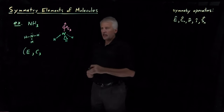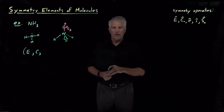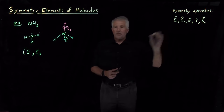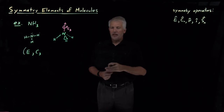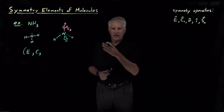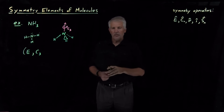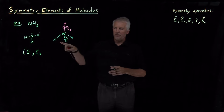That's the only rotation we'll be able to find. As for reflection planes: does the molecule have any reflection planes? Can I bisect the molecule in some way that leaves the half on one side of the mirror identical — a mirror reflection of the half on the other side? That might be a little bit difficult to see from this orientation.